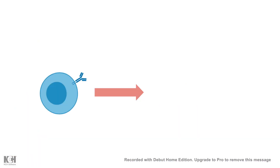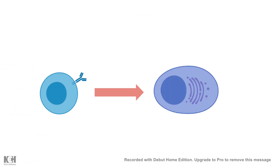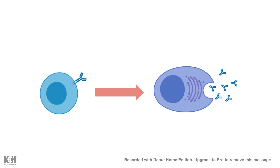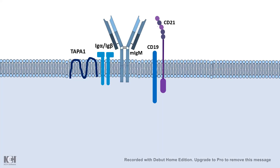B cells are an important component of the adaptive immune system. When differentiated, B cells become plasma cells, which are the source of secretory antibodies. These secretory antibodies against a pathogen might neutralize or destroy them. B cell receptor signaling is therefore a very important and interesting topic.